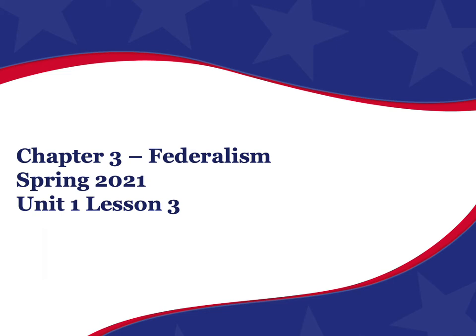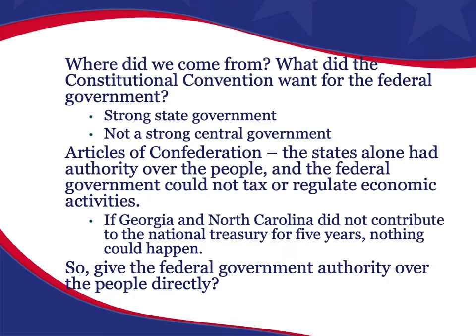This is the third and final lesson in unit one and today we're talking about federalism, which is found in chapter three of your textbook. So where did federalism come from? Where did our form of government come from? What did the Constitutional Convention want for the federal government? How did the Founding Fathers see this whole United States government experiment playing out?